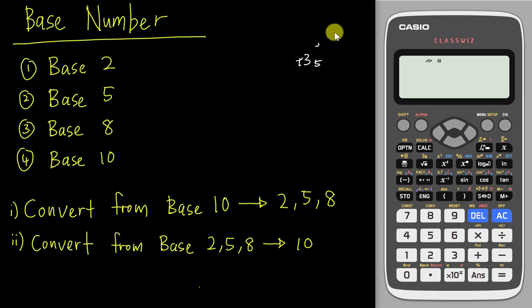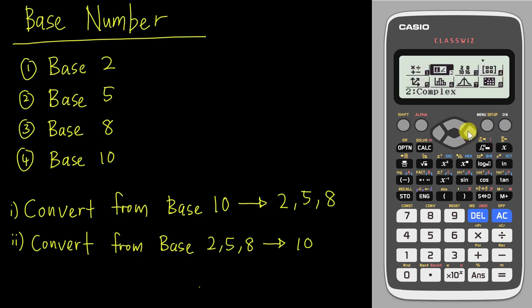This calculator has a special function for base numbers. You just press the Menu and you should be able to see 'Base N.' Your N can be either 2, 8, 10, or 16. Note that this calculator doesn't have base 5 — it has base 16 instead — but in SPM you're not going to use base 16.